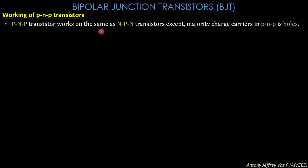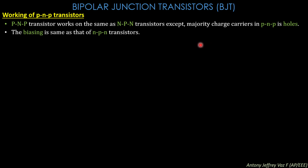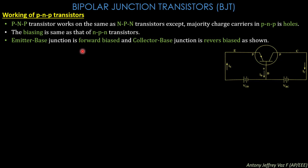Next we will see about the working of PNP junction transistors. PNP transistors work in the same way as NPN transistors except the majority charge carriers are holes instead of electrons. The biasing configuration is shown with the emitter terminal represented by an arrow entering the base, the other end as the collector, and the base terminal.